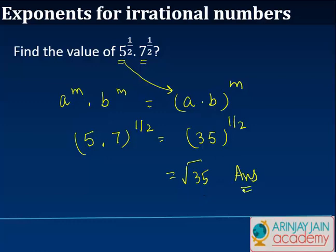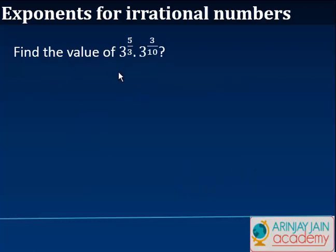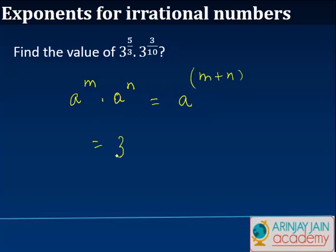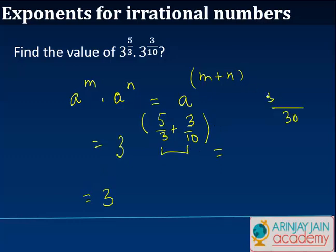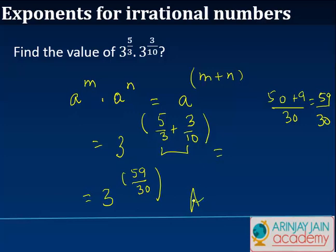And that's your answer. Similarly, we can also resolve an equation where we have a to the power m times a to the power n. This can simply be written as a to the power m plus n. In other words, 3 to the power 5 upon 3 plus 3 upon 10. If we solve this, we get 50 plus 9 over 30, which gives us 59 by 30. So you can write this as 3 to the power 59 by 30, and that's your answer.